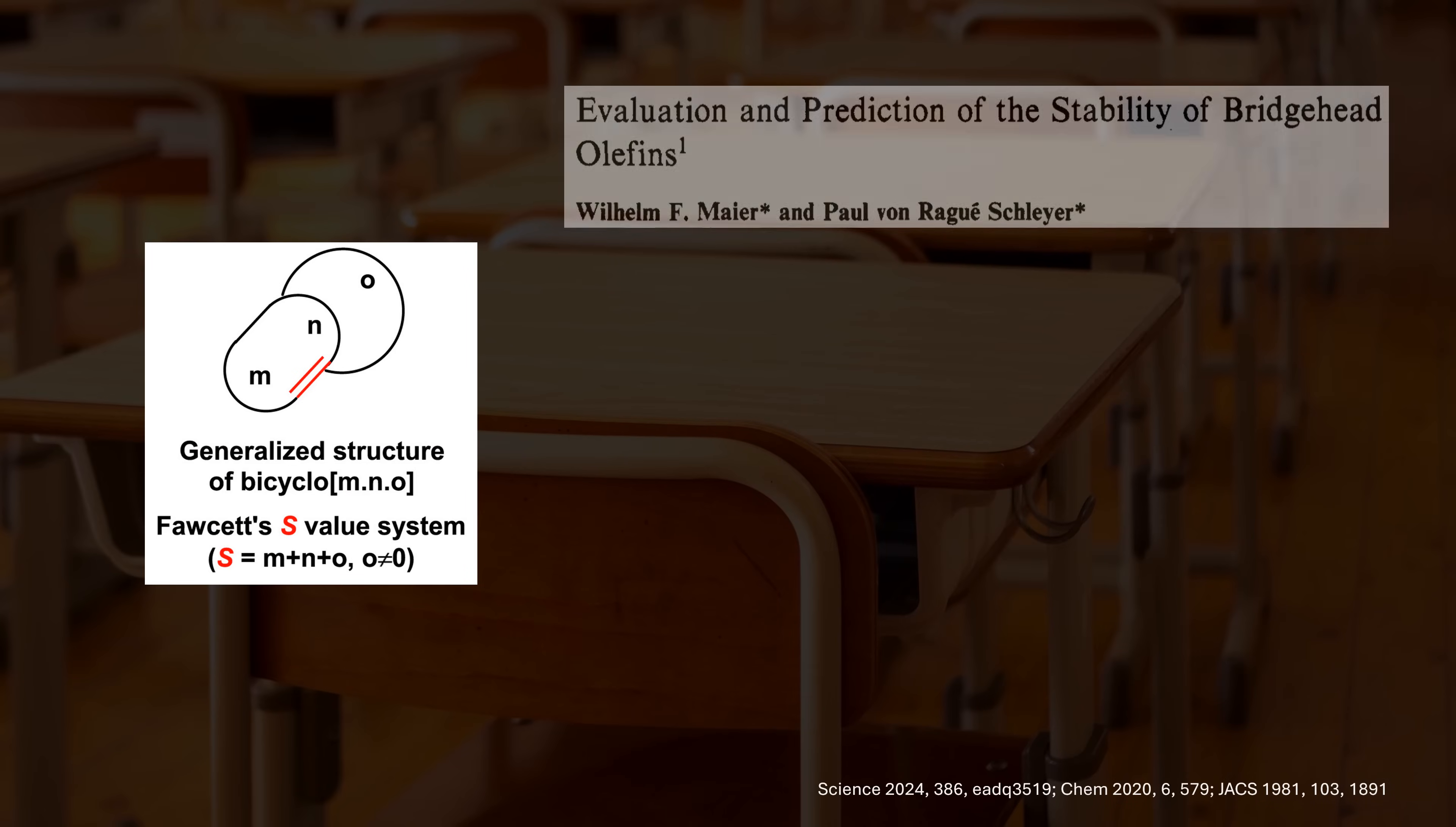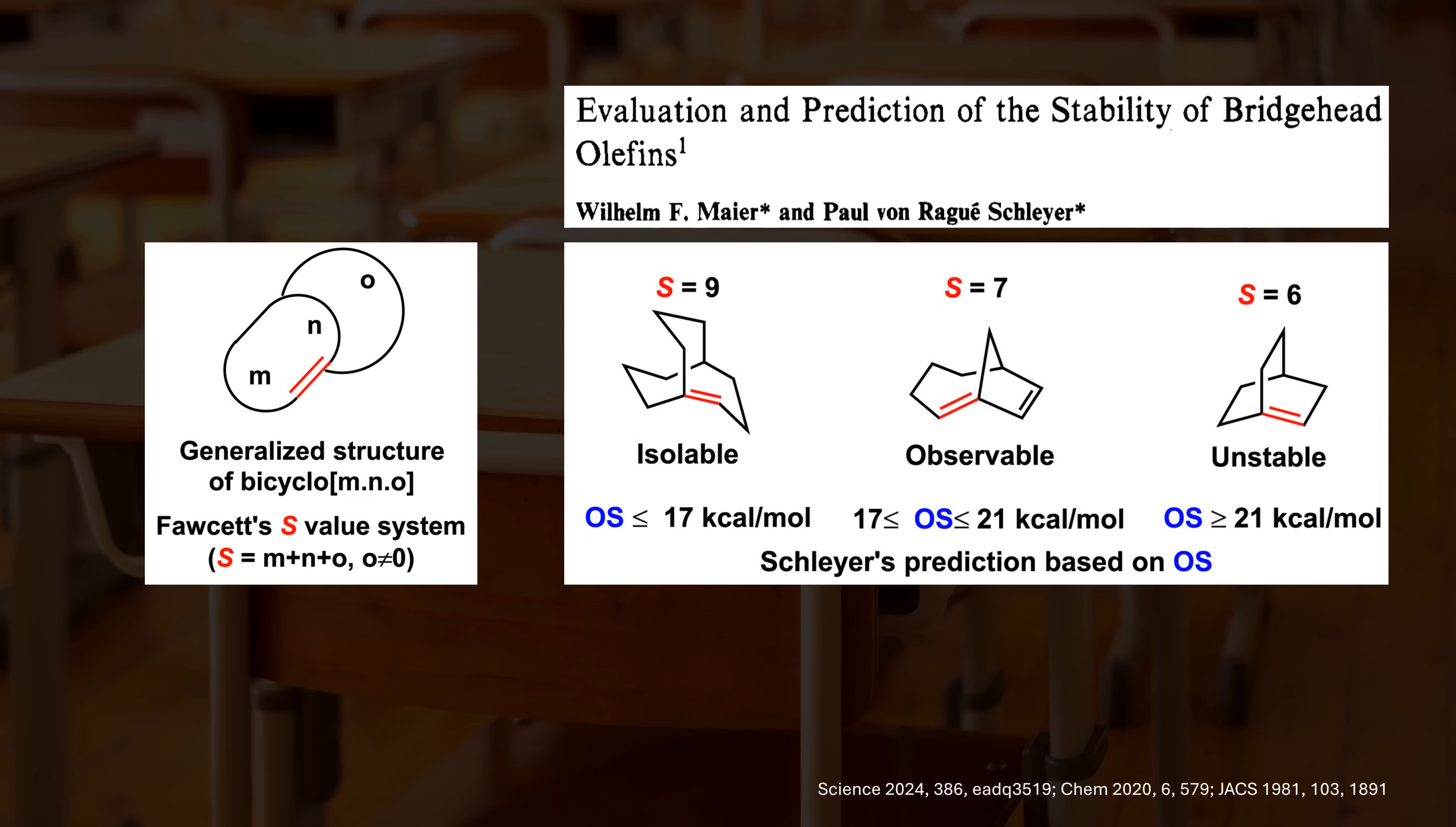Here it becomes useful to quantify the size of a bridged ring by simply adding up the number of atoms in the bridges. The pioneers found that the strain estimation can pretty accurately predict if an olefin is stable at room temperature, whether it's only observable at lower temperatures, or whether it's so unstable that we can't observe it or form it at all. Small rings are very strained while larger bridged rings can increasingly accommodate the desired olefin geometry without all the energy penalties.